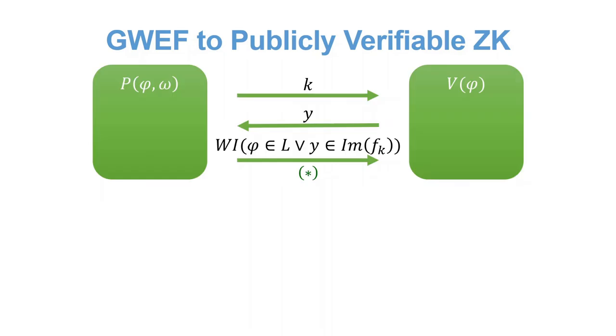So given a general WEF, the zero-knowledge protocol will be as follows. For some language L, in order to prove that a statement phi is in the language, an honest prover will sample a key to the function family and send it over to the verifier. The verifier, in turn, will sample an image to the corresponding function.